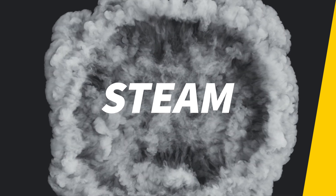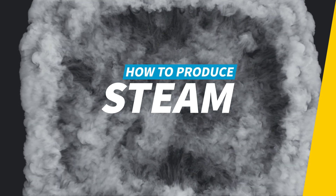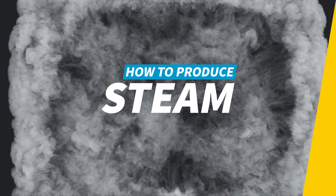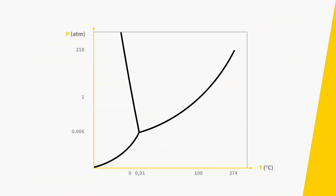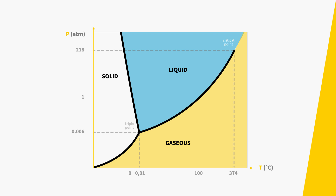That answers what steam is, but how do we get it — how do we produce steam? One way to generate steam is by vaporizing water at a fixed pressure. Take atmospheric pressure for example. This graph shows that when you heat up water at atmospheric pressure, that water will vaporize and turn to steam at 100 degrees Celsius.